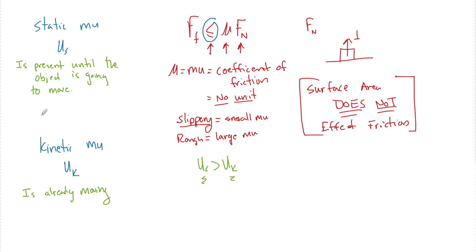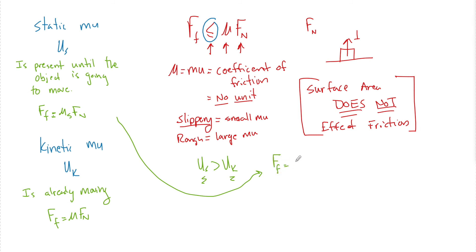The maximum static friction is given by mu_static times the force of the normal — that's the maximum amount of static friction force you can create. Why the less-than-or-equal-to sign? Say the maximum static friction force is six newtons. If I apply one newton and the box doesn't move, static friction is one newton. If I apply five newtons, friction acts as five newtons. If I apply exactly six newtons, friction is six newtons. My applied force would have to be greater than six newtons for the object to actually move.